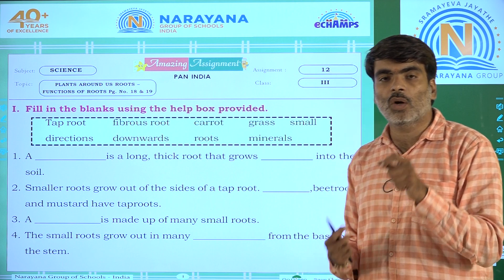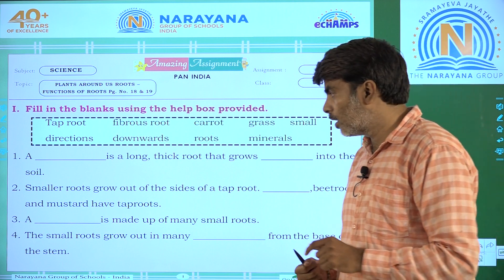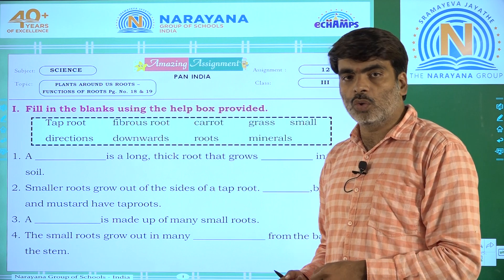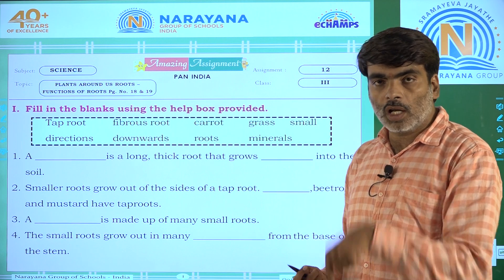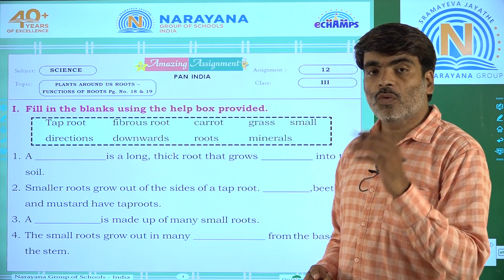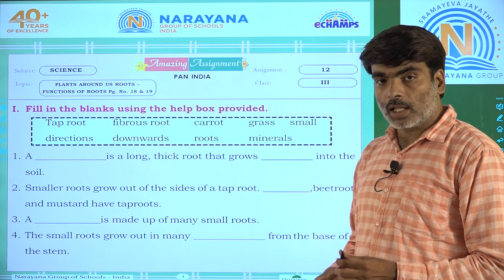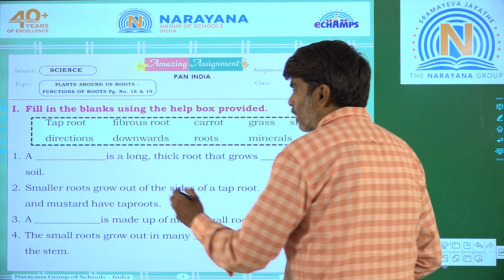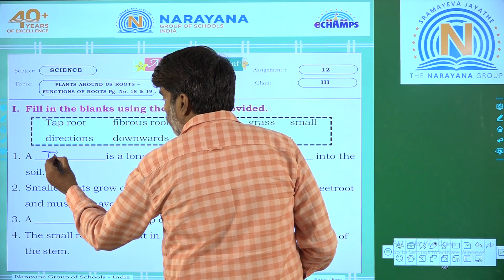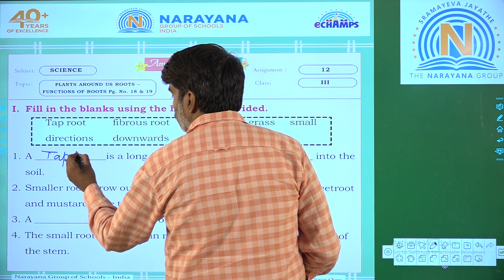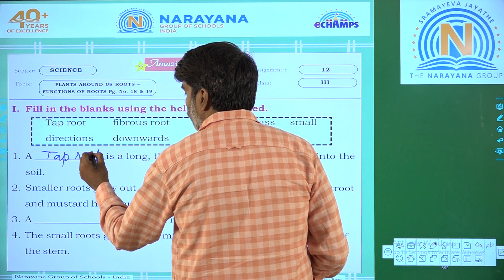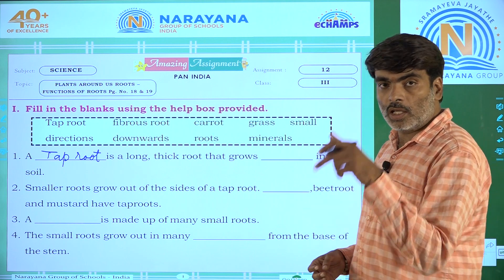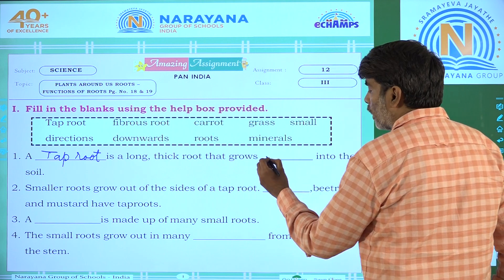If you see a carrot, how it looks? It is very thick and long and it is a root. It grows deep, in a downward direction. So what kind of root is it? It is a tap root — it grows in a downward direction.